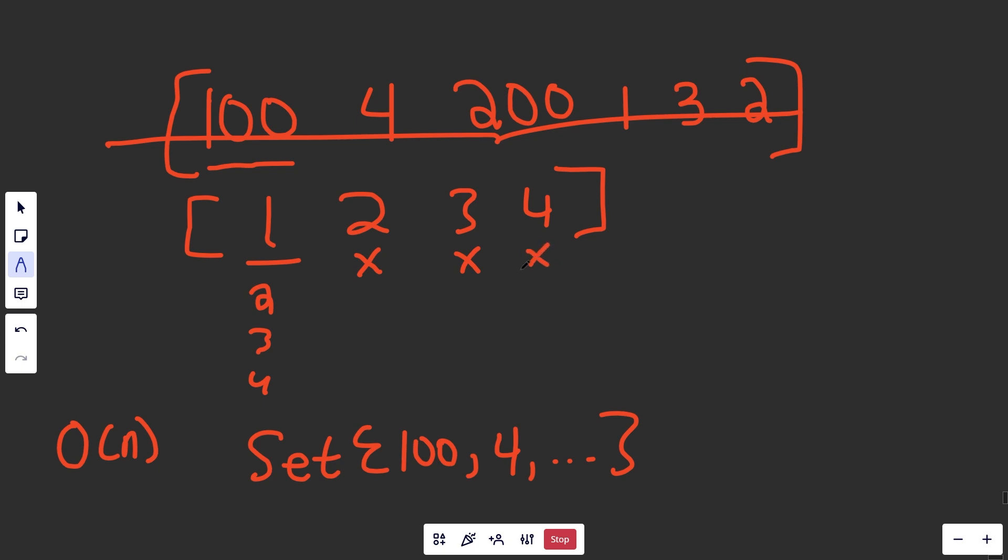So to do it for our original problem here, we would put all this stuff in the set, and we'd say, is 99 in the set? No, it's not. So let's try running this. Is 101 in the set? No, it's not. And so this just outputted a sequence length of 1.